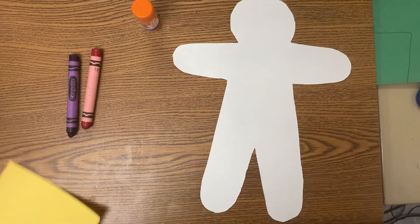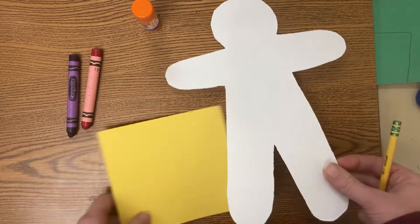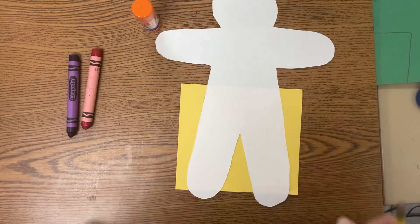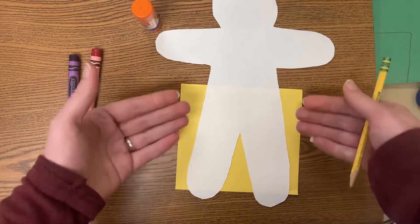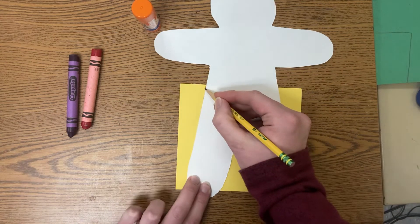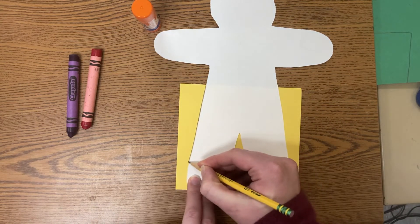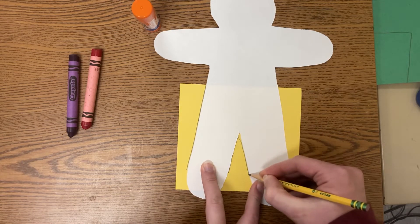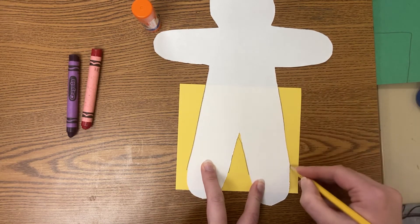Now I'm going to make the pants or the shorts or the skirt. To make the pants I'm going to put this underneath again but this time you'll notice it's towards the bottom of my person. And to get it to fit my person I'm going to trace down the side. I don't have to go all the way down.